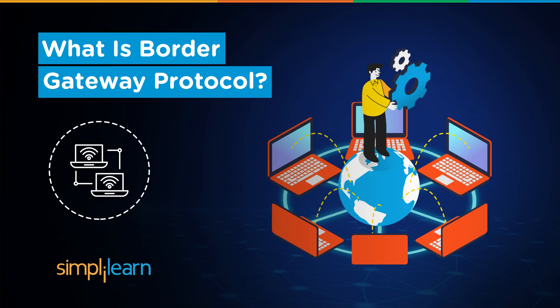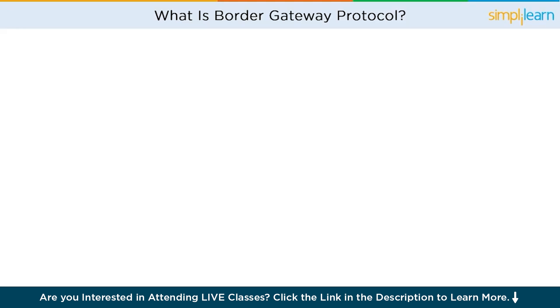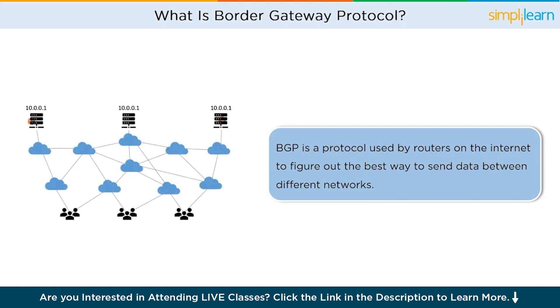Stay with us until the end of the video as we walk through the workings of Border Gateway Protocol. So let's get started. BGP is a protocol used by routers on the internet to figure out the best way to send data between different networks. It helps routers exchange information and make decisions on the most efficient paths to send data packets across the internet.